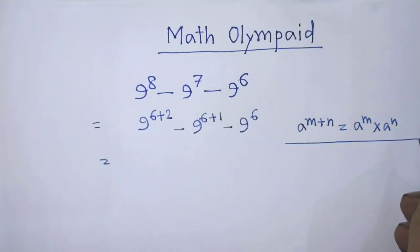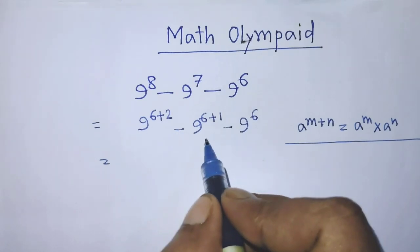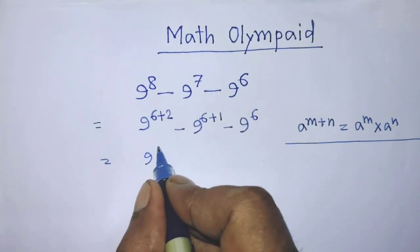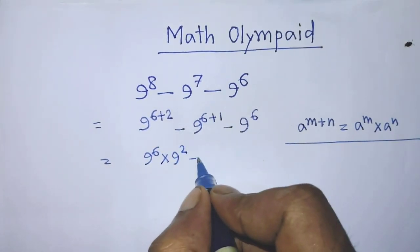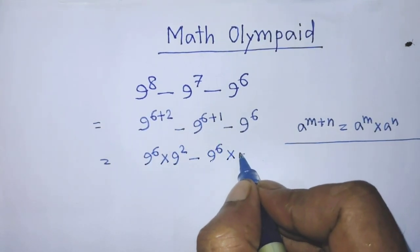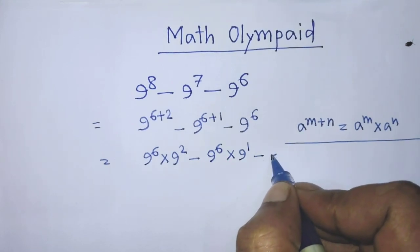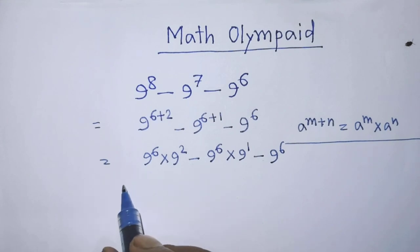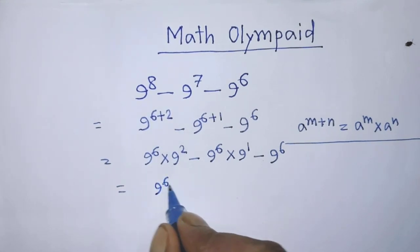According to this formula, we can write the first two terms as: 9 to the power 6, times 9 to the power 2, minus 9 to the power 6, times 9 to the power 1, minus 9 to the power 6.